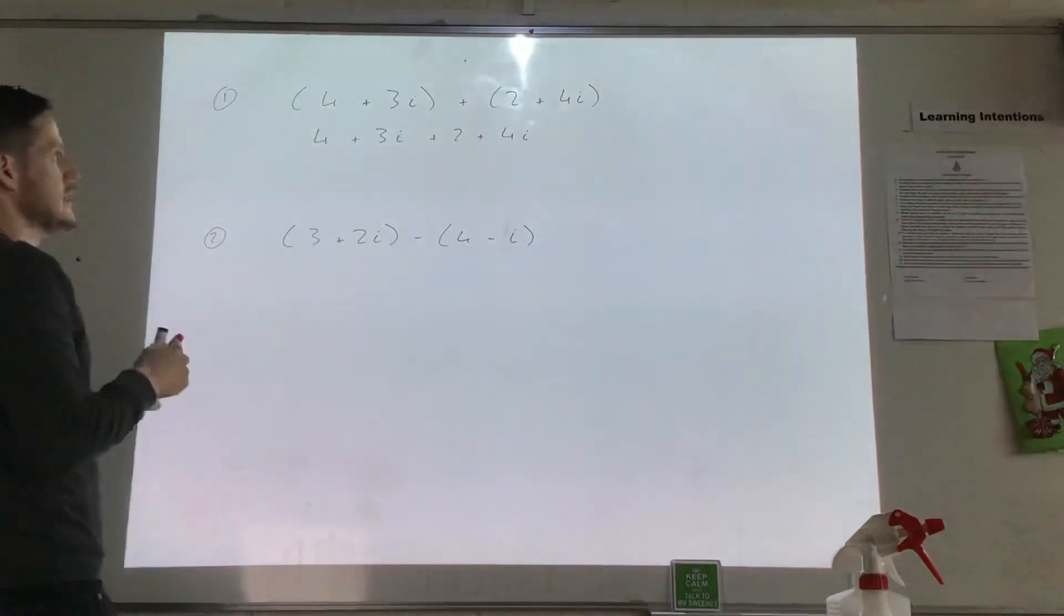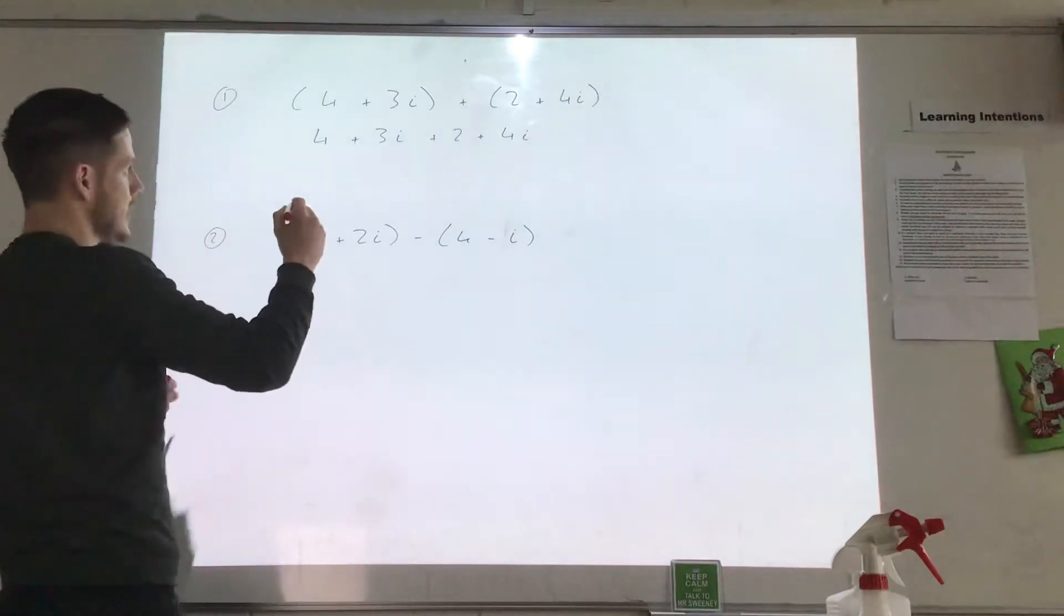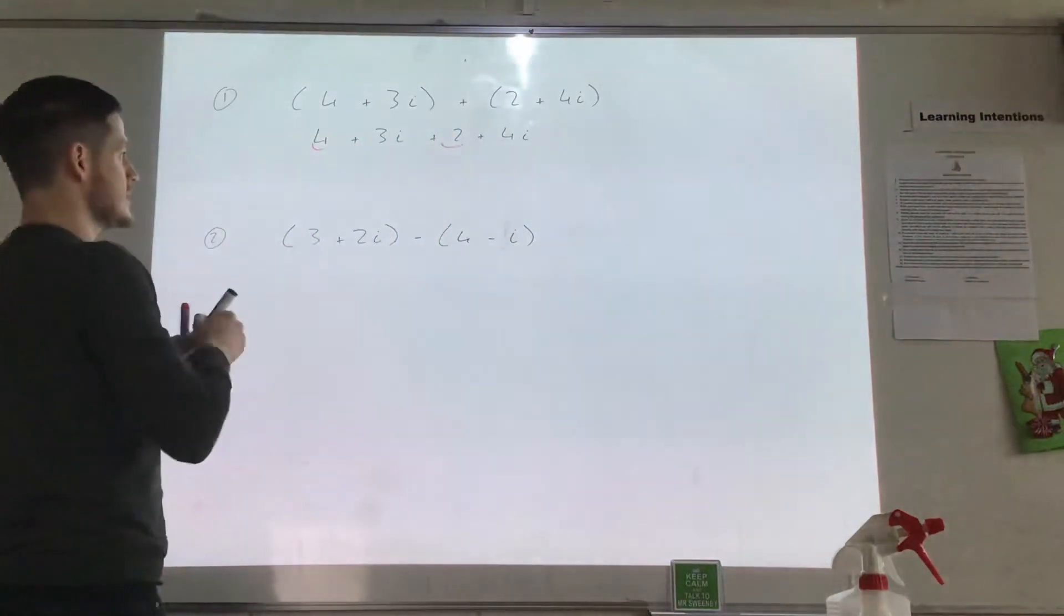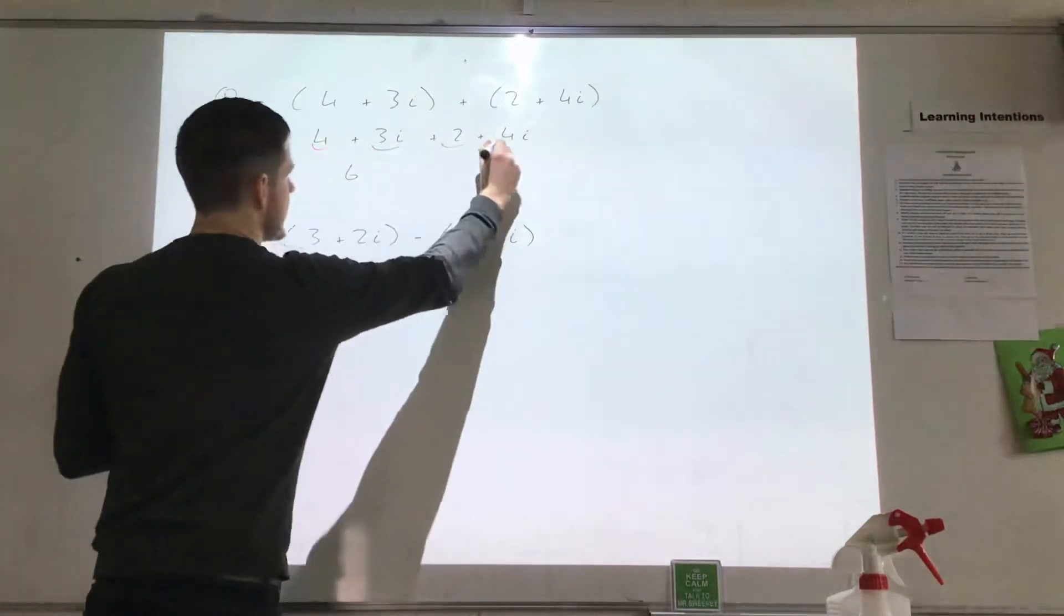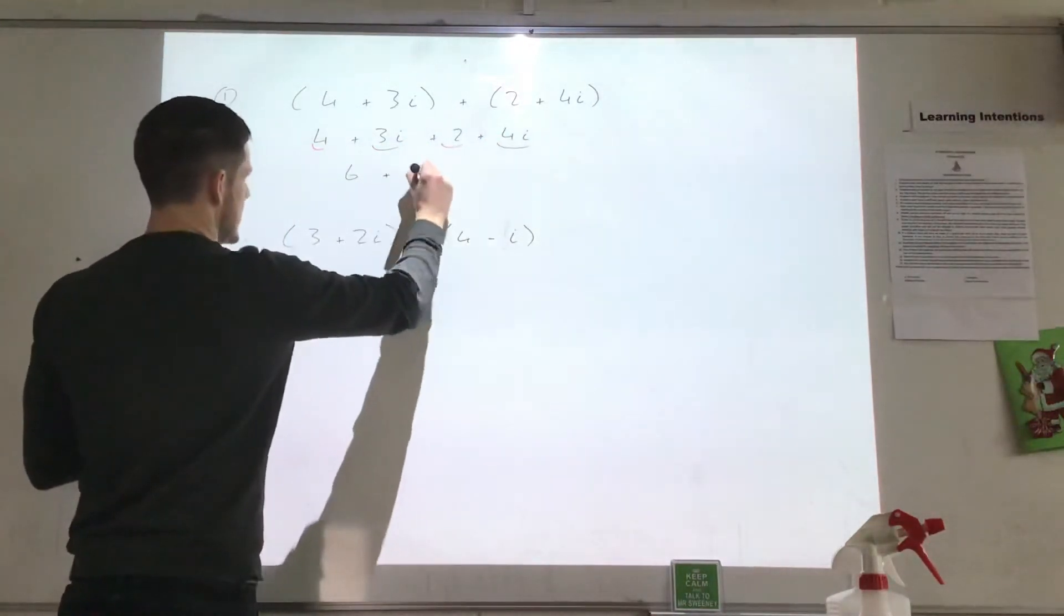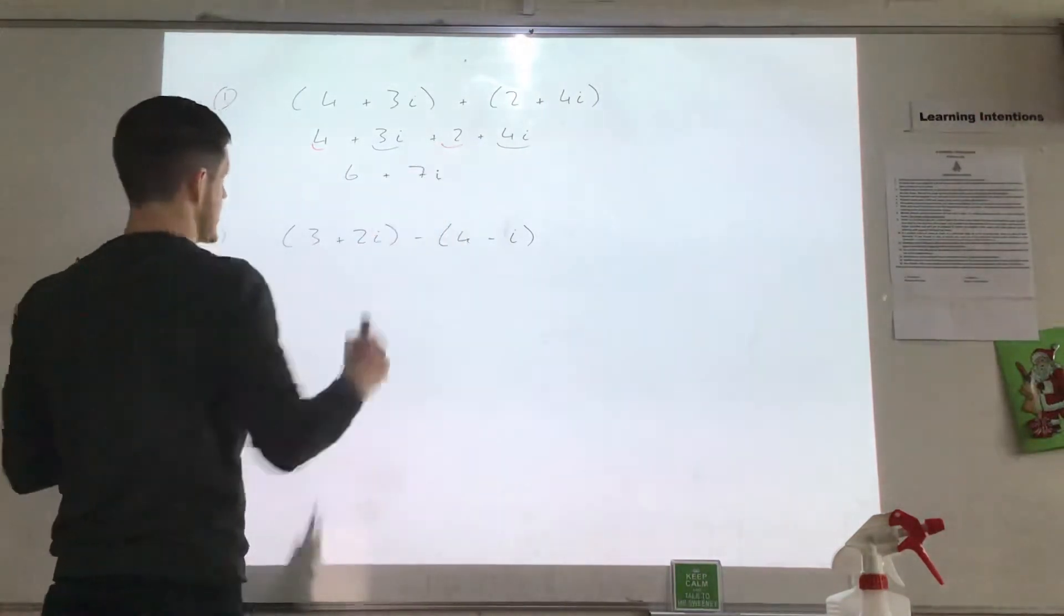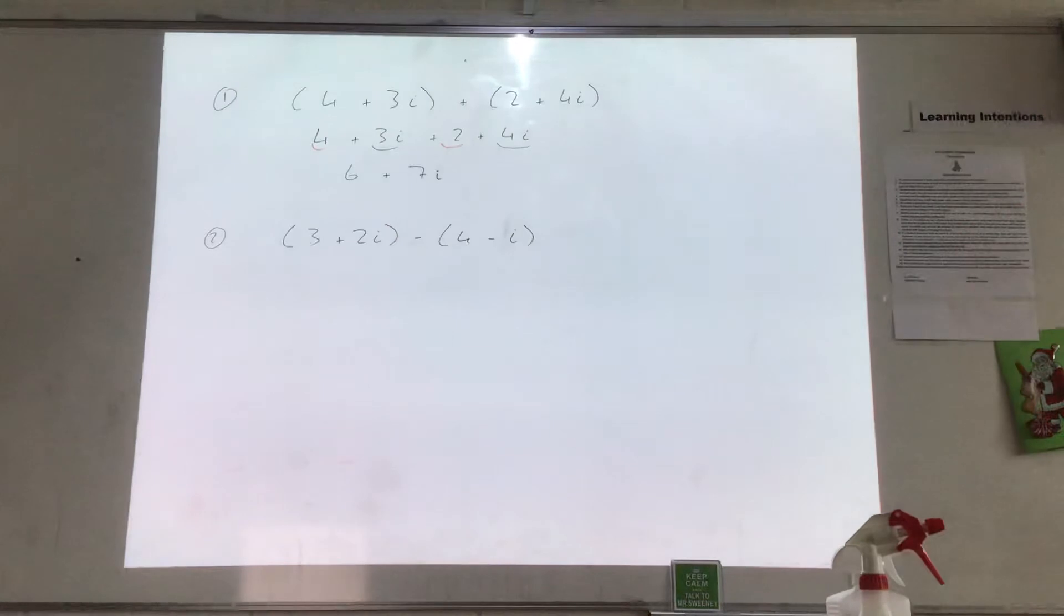And what we can do is add together our i's and our real numbers. So 4 plus 2 gives me 6, and 3i plus 4i gives me 7i. That's my answer, 6 plus 7i. Hopefully that's not too bad.